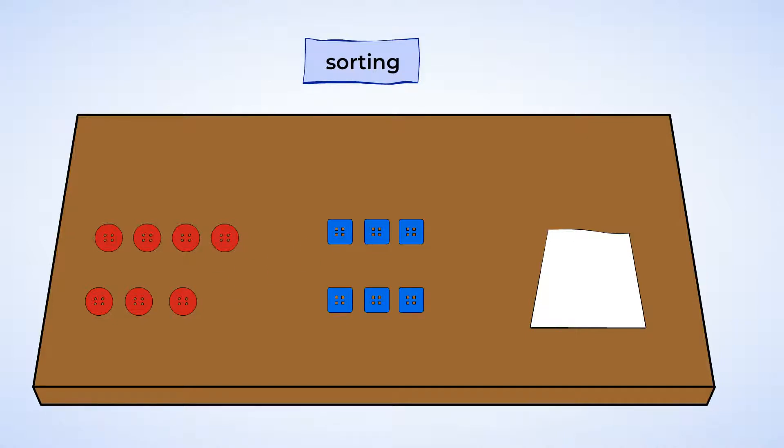Now, the big question, how many red buttons does Will have? Let's count them. One, two, three, four, five, six, seven. There are seven red buttons.